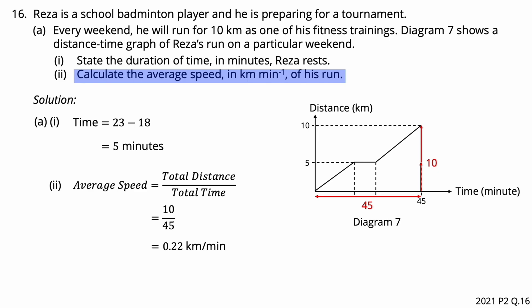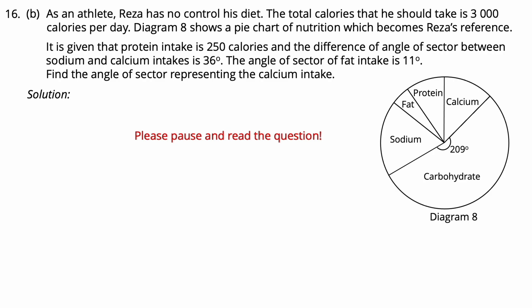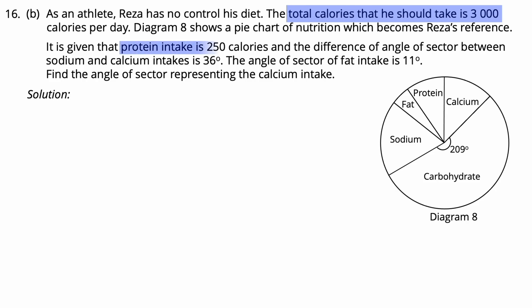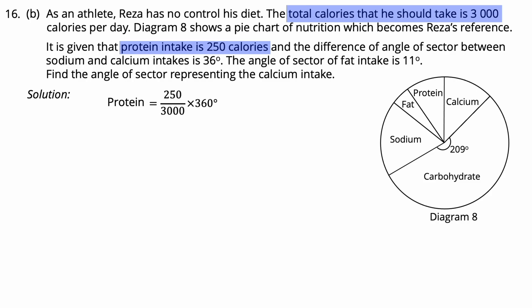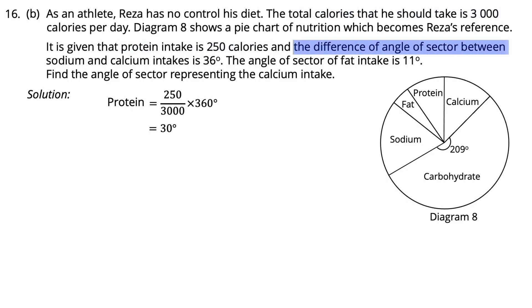Question 16B. The total calories that Reza should take is 3000 calories per day. He takes 250 calories of protein per day. The angle of the sector of protein equals 250 over 3000 times 360, which equals 30 degrees. The difference in angle of sector between sodium and calcium intake is 36 degrees.